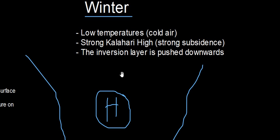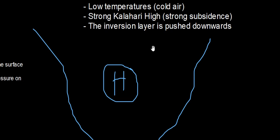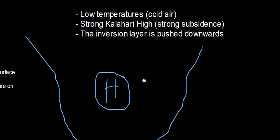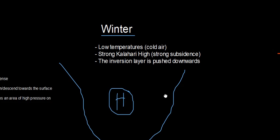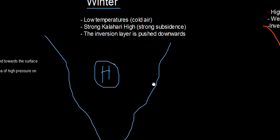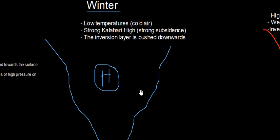During winter, you have low temperatures. Low temperatures mean you have cold air, and cold air tends to sink down, exerting a lot of force on the surface and creating an area of high pressure. This is why we see the Kalahari High pressure on the surface — because during winter there is strong subsidence: cold air sinks down and creates this area of high pressure, which we call the Kalahari High.